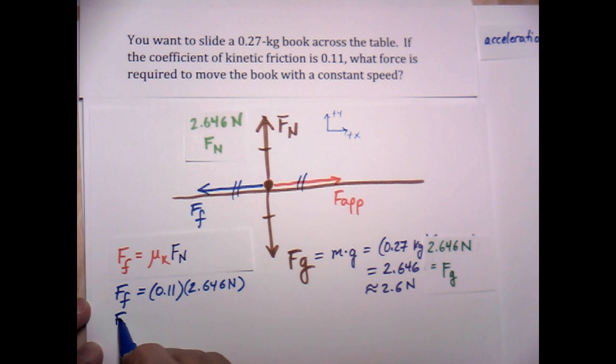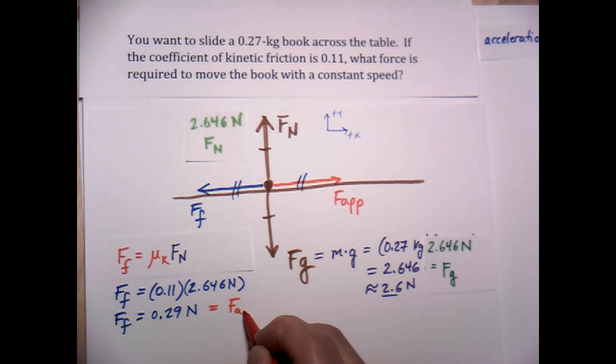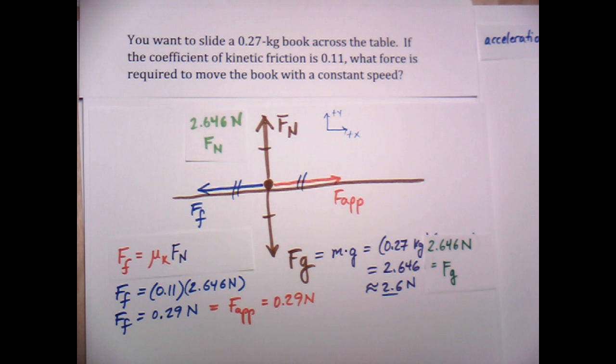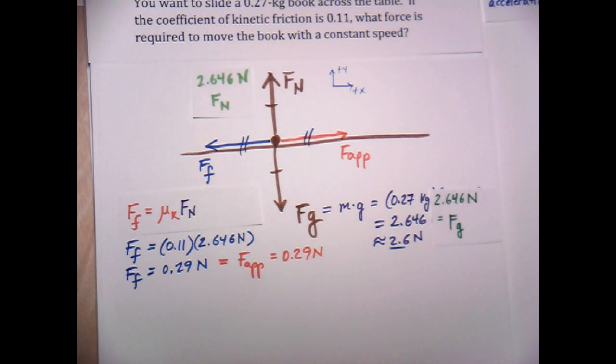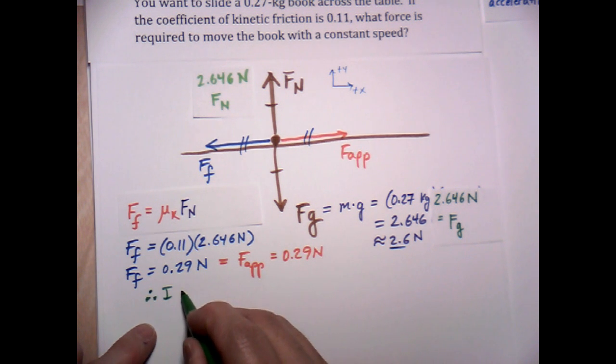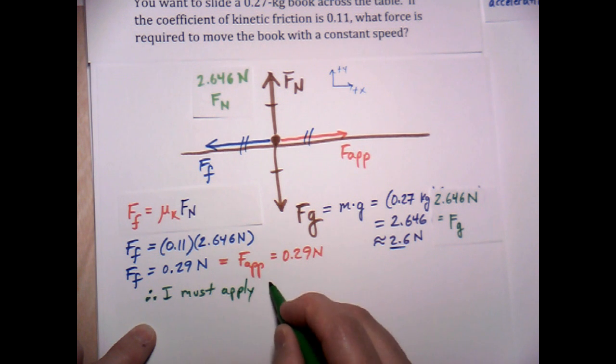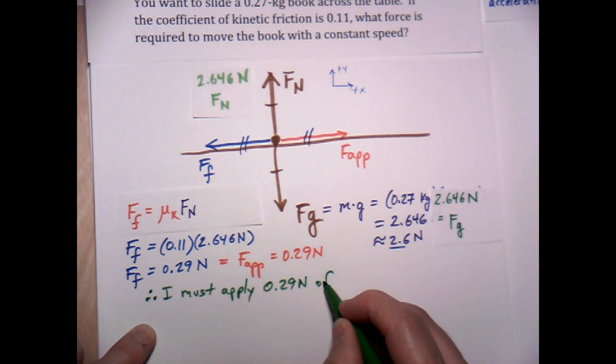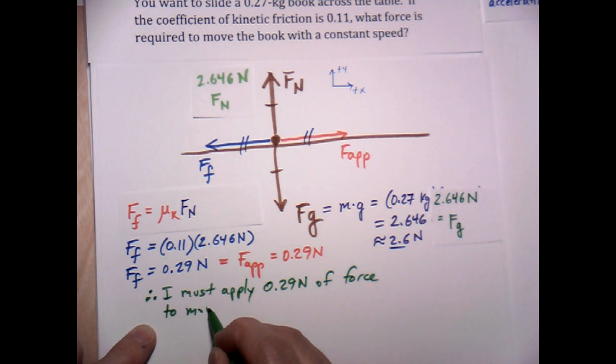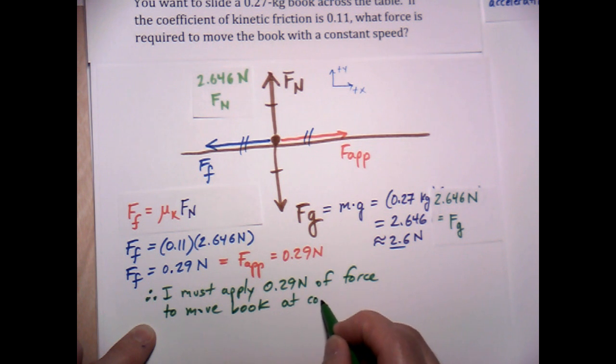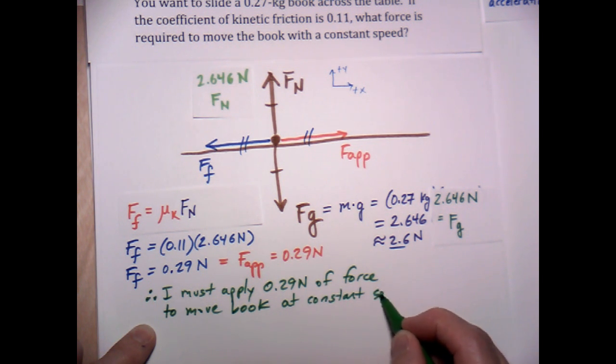The frictional force then, when we calculate that out, and take into account the two sig digs is 0.29 newtons. So that means that if the frictional force is equal to 0.29 newtons, then the force I must apply equals the force required is equal to 0.29 newtons. And let me write the therefore statement that goes along with this. Therefore, I must apply 0.29 newtons of force to move the book at a constant speed.